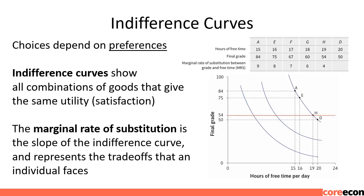Indifference curves show all combinations of goods that give the same utility or satisfaction. The marginal rate of substitution is the slope of the indifference curve and represents the trade-offs that an individual faces. The production function tells us how we can take an input — hours of study — and turn it into output — final grade — but it does not tell us how we feel about those inputs and outputs. To think about the choice we are going to make, we have to think about preferences and trade-offs. Every extra hour of studying is an hour of free time lost, even though it gives us a higher final grade.